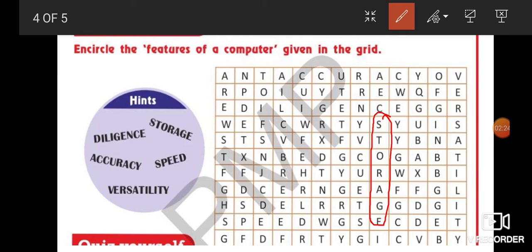Second one is speed. In the second last line you can see here speed. Next is diligence.